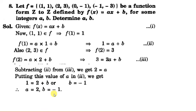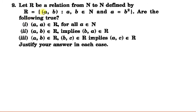So a is 2 and b is -1. This is the next question: R is a relation from N to N defined by R = {(a,b) such that a is equal to b²}, means the first element is the square of second. We have to see whether these three statements are true or not.